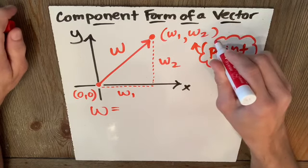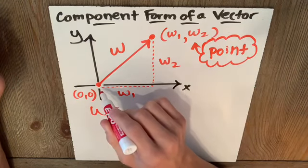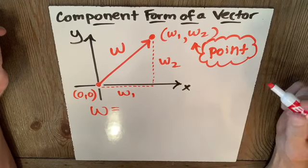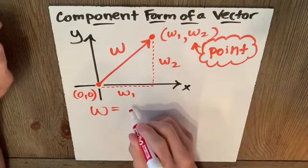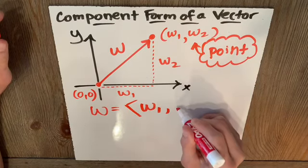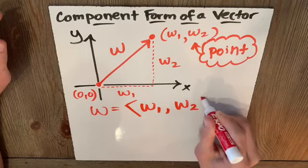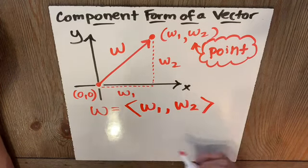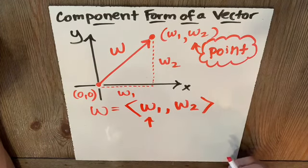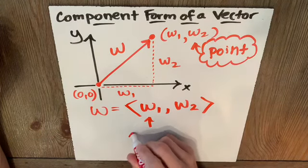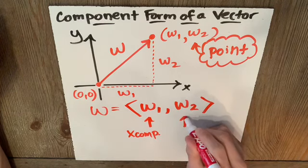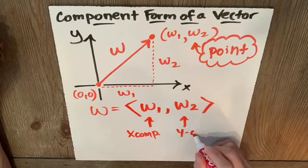Now to get to that point, I had to go x component and then y component. So I can talk about a vector w being made up of x component w1 comma y component w2. So when you see these crimped brackets like this, you know you're referring to a vector. The first number is the x component. And the second number is your y component.